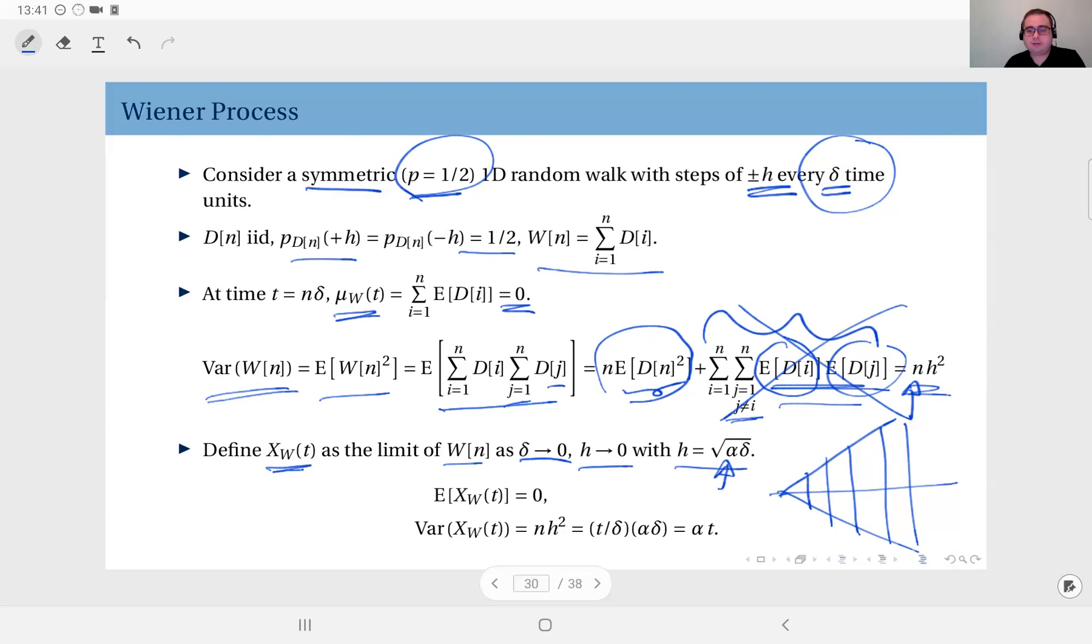In some texts you will not see this alpha - in Leon-Garcia you have the alpha, in Casebook you don't. Some books don't use it, but here I've taken it to allow for the general case. When you look at this random process at the limit, this expectation is also zero because the expectation of W is zero. The variance is n times h squared, which means since n equals t divided by delta, and h squared is alpha times delta, therefore the variance is alpha times t. The variance is proportional with time.